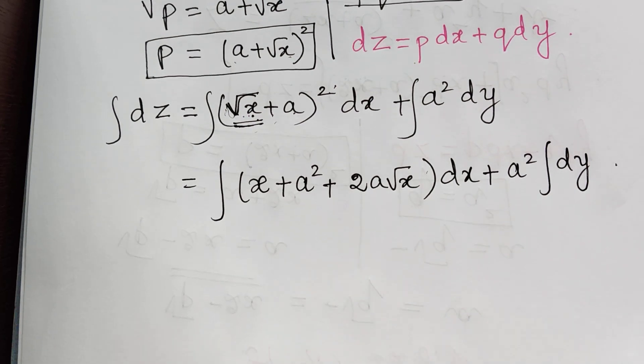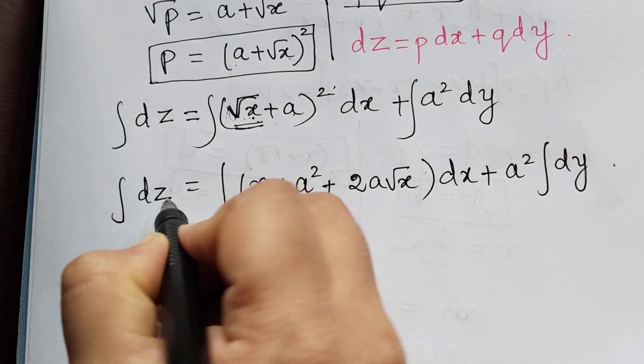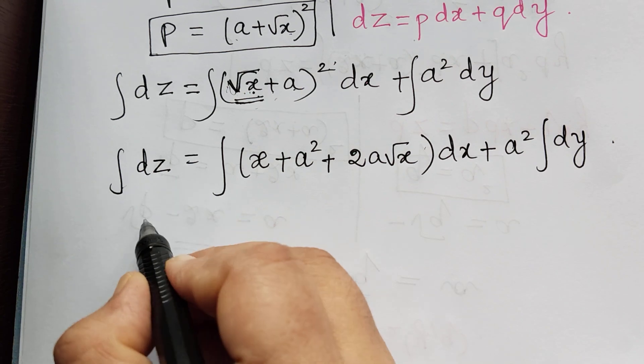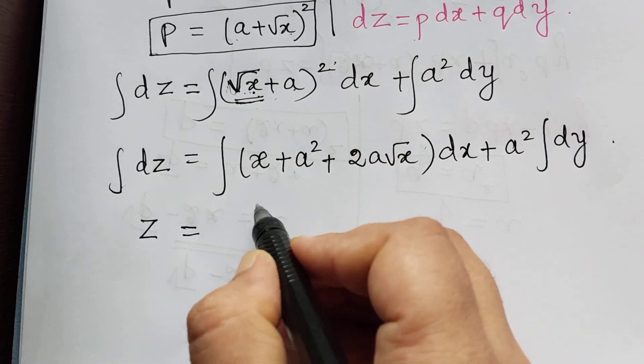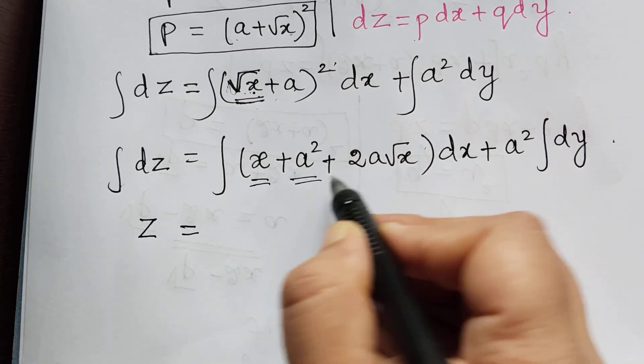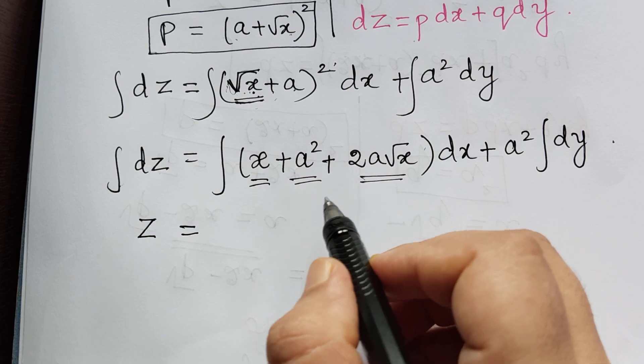So now next, here we have integral dz. Now we shall integrate it. So integral dz will be z is equal to, now we shall integrate each term separately in this. So when we do that,